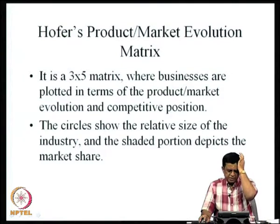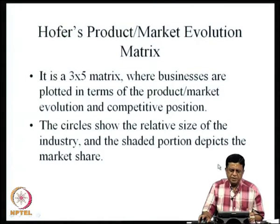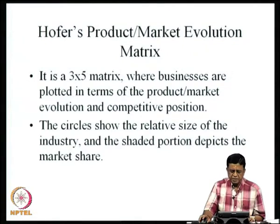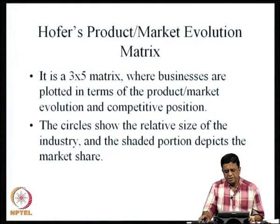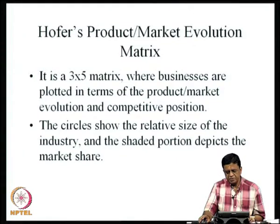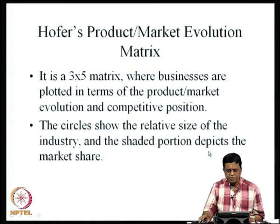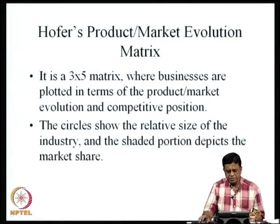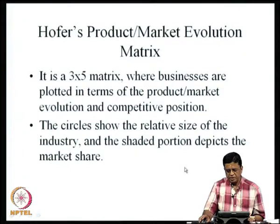Now we come to the next matrix — the Hofer's product/market evolution matrix. It is a 3 by 5 matrix where businesses are plotted in terms of product/market evolution and competitive position. The circles show the relative size of the industry and the shaded portion depicts the market share.